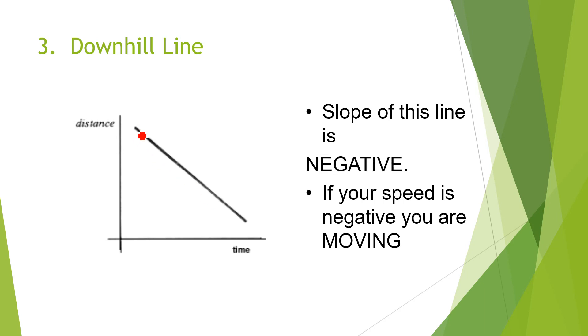In the third case scenario, the line is going in a downward direction, so the slope of this graph is negative. If the slope is negative, it means the velocity is negative — the object is going in the backward direction.